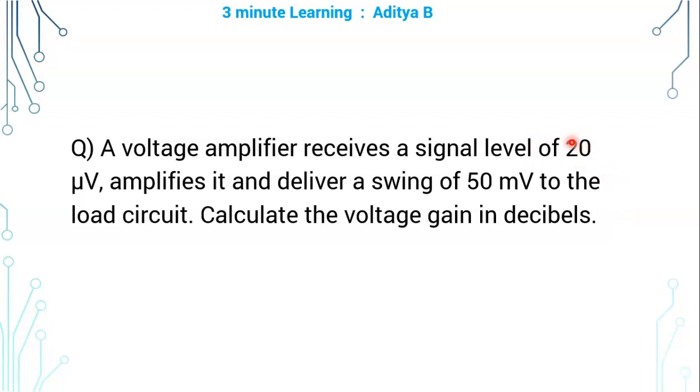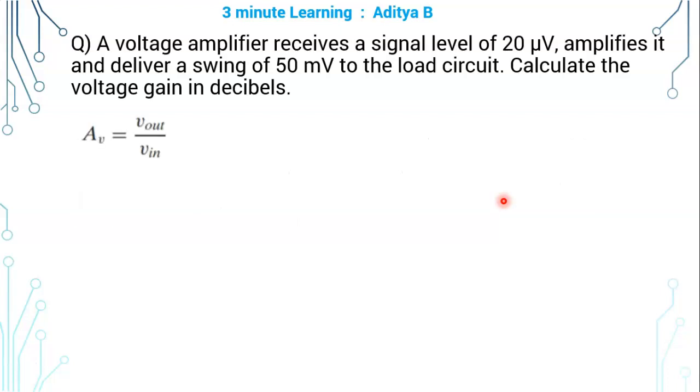Here input is 20 µV whereas the output is 50 mV. Voltage gain is the ratio of output voltage to input voltage. In other words, it indicates the factor with which input voltage is multiplied and presented at the output.